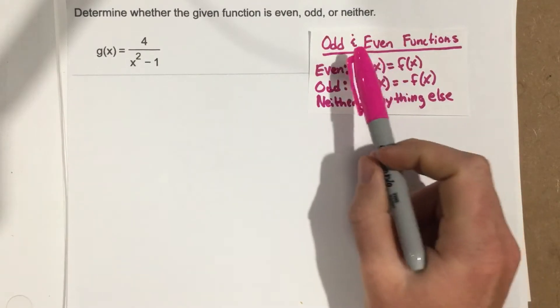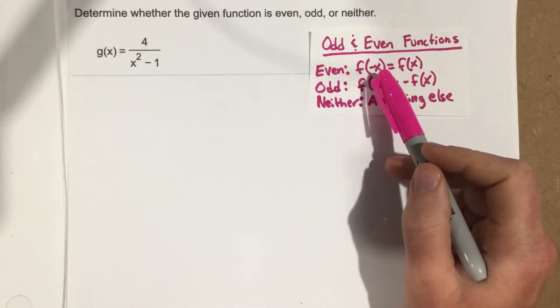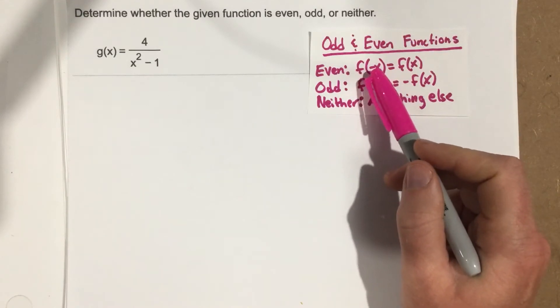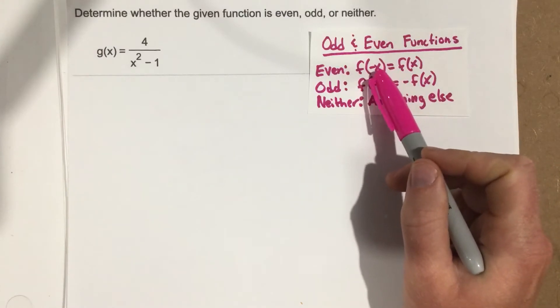Now we know the definition of odd and even functions. Even functions occur when you have a negative input plugged into your function, and that function doesn't change. So you plug in some negative input for x,